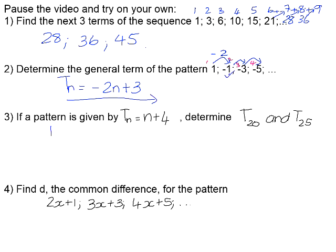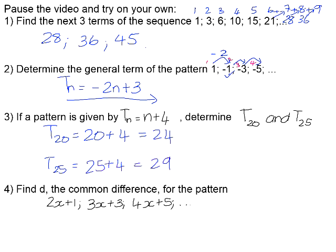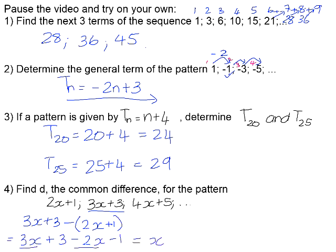Number 3: find T20 and T25 given the general term TN = N + 4. T20 = 20 + 4 = 24, and T25 = 25 + 4 = 29. Number 4 is something a little different: find D, the common difference, for the pattern. Remember the common difference is a term minus the term before it, giving us (3x + 3) − (2x − 1). 3x − 2x = x, and positive 3 − 1 = positive 2, so D = x + 2.